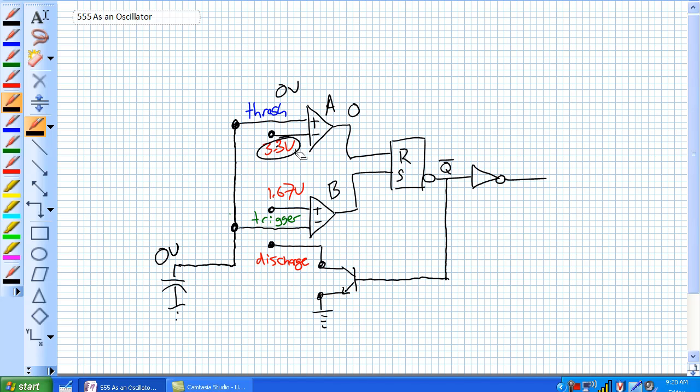But now, comparator B, what's it going to do? Well, it's got 1.67 on the plus, which is higher than the minus input of 0 volts. So it's going to do 1, and it's going to set the latch. But since we are taking not Q, it's going to be a 0 here. And according to our discharge transistor here, when a 0 is applied to the base, one could easily just draw that as an open circuit, meaning there's no path to ground.